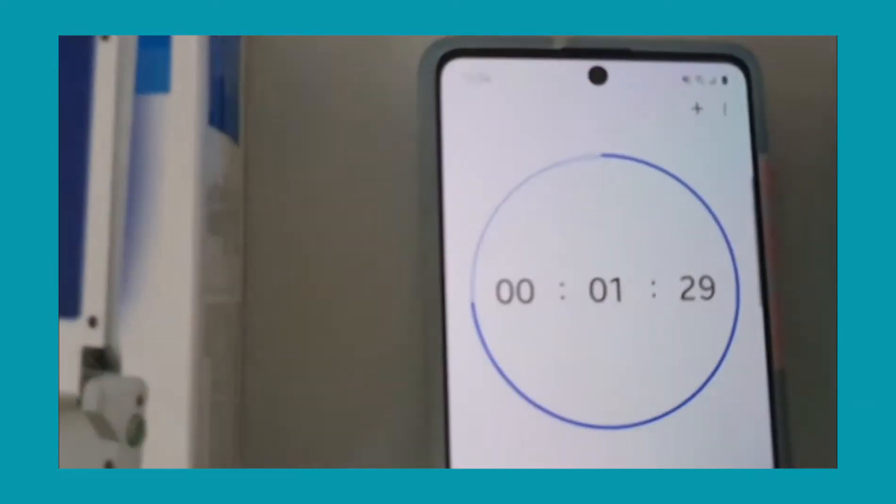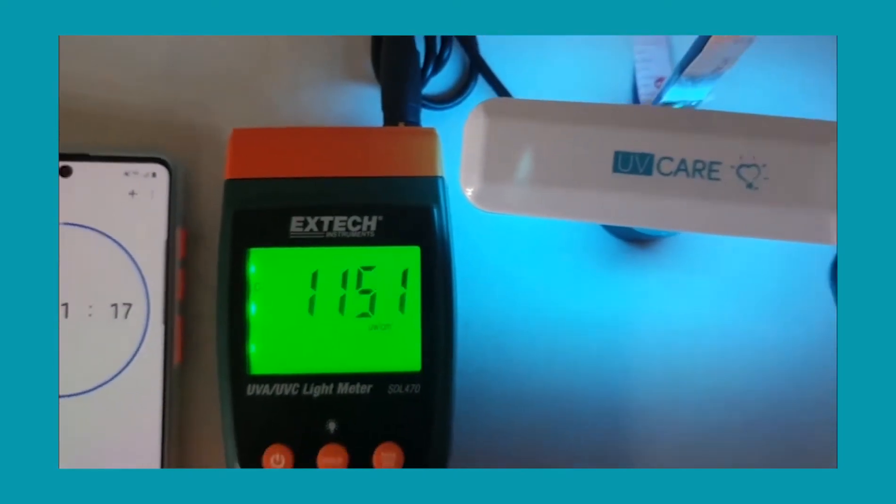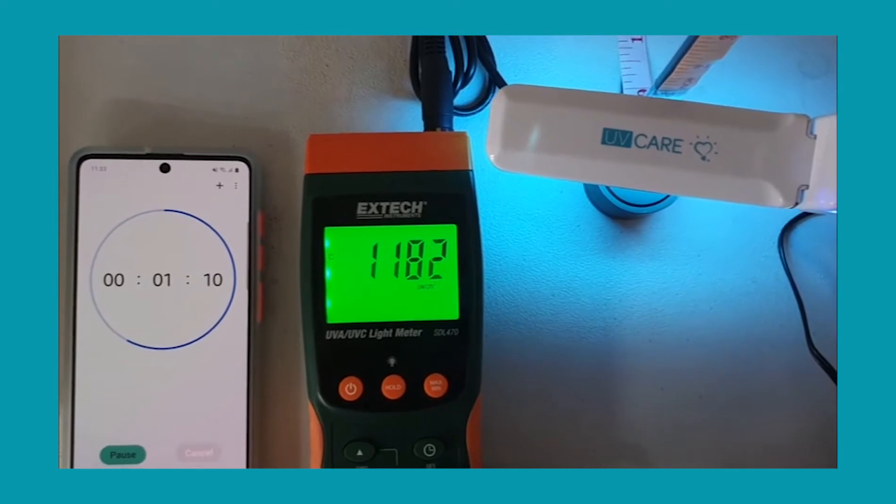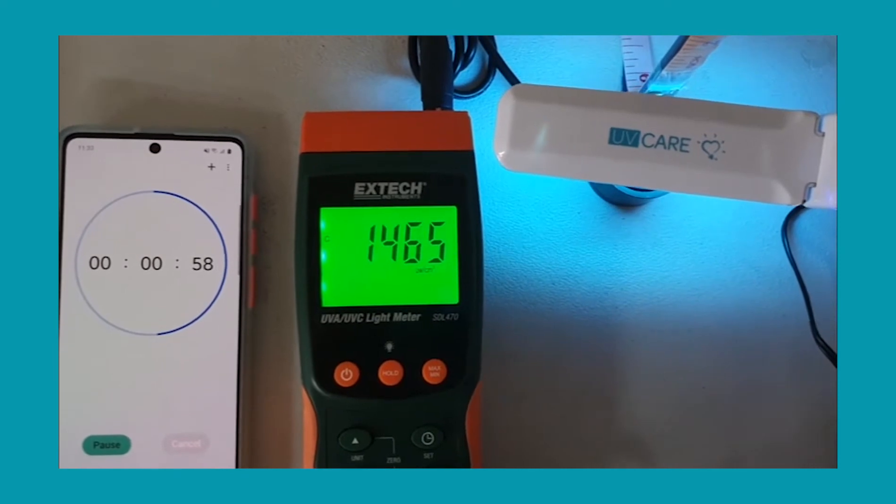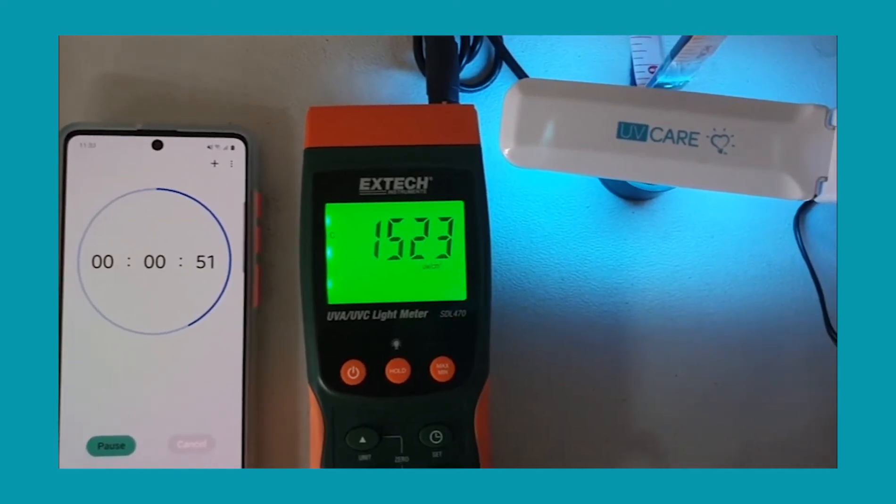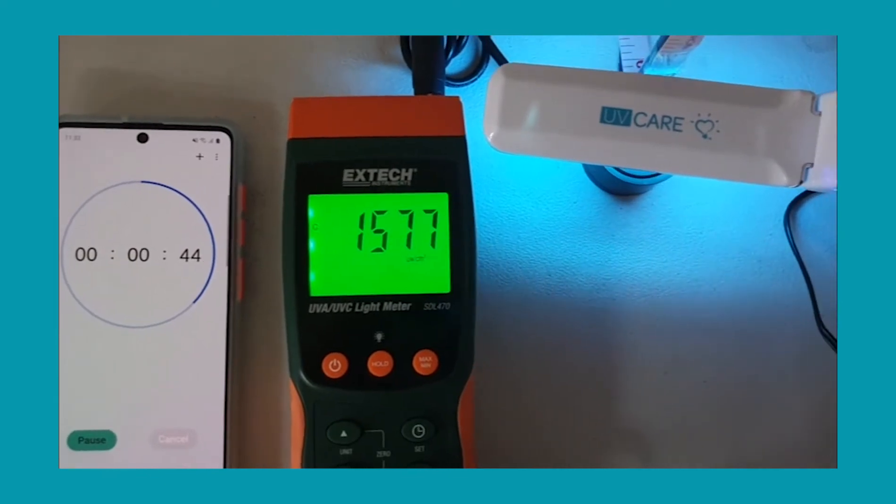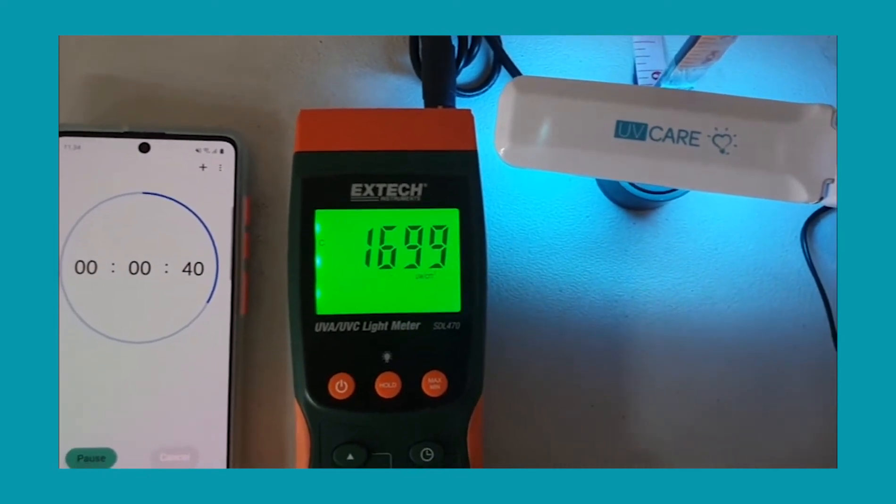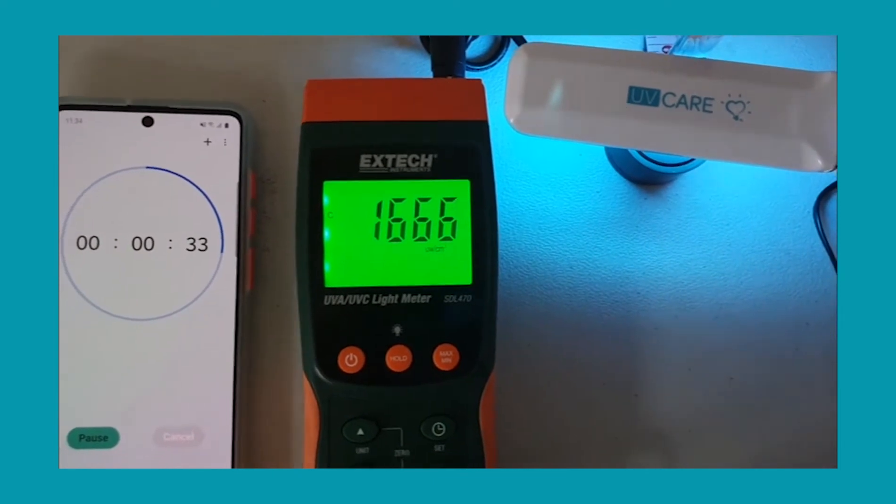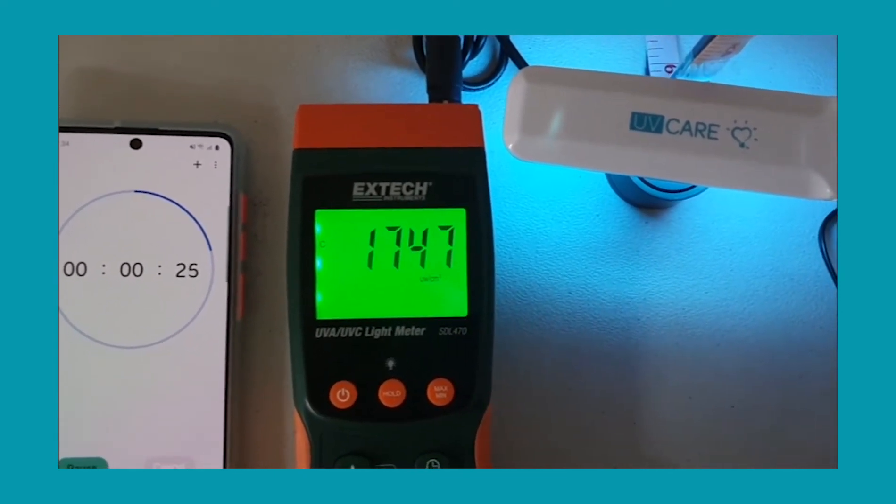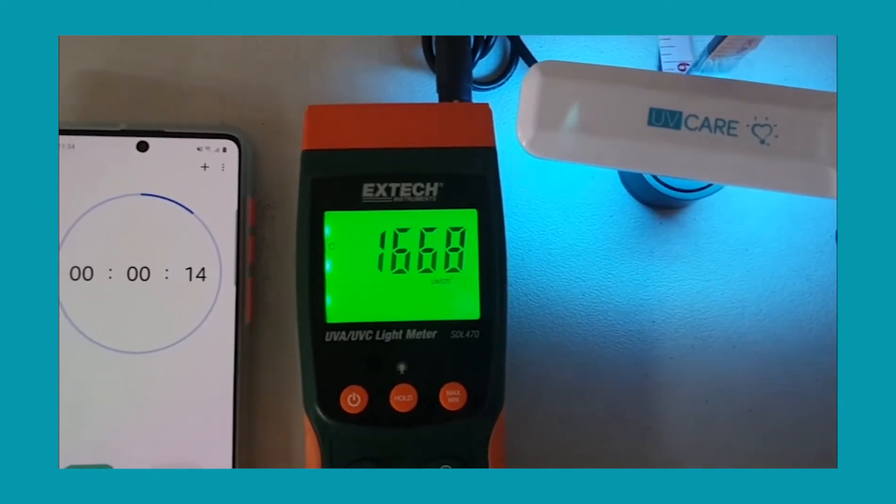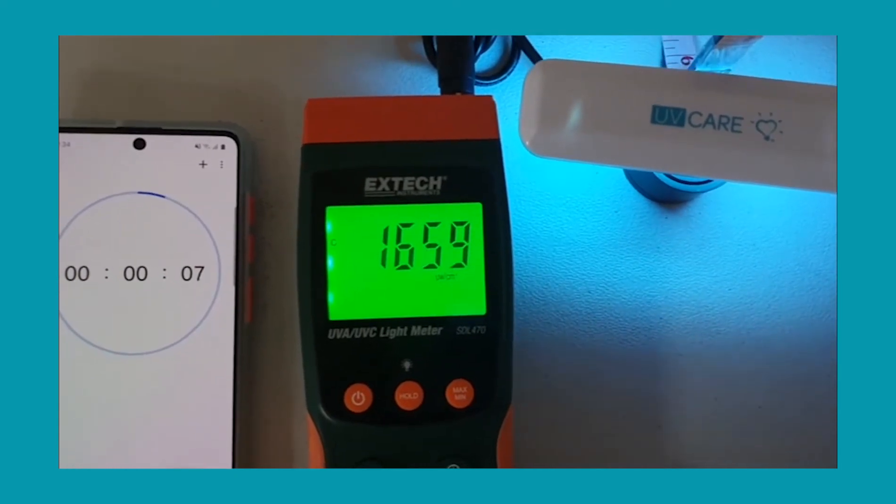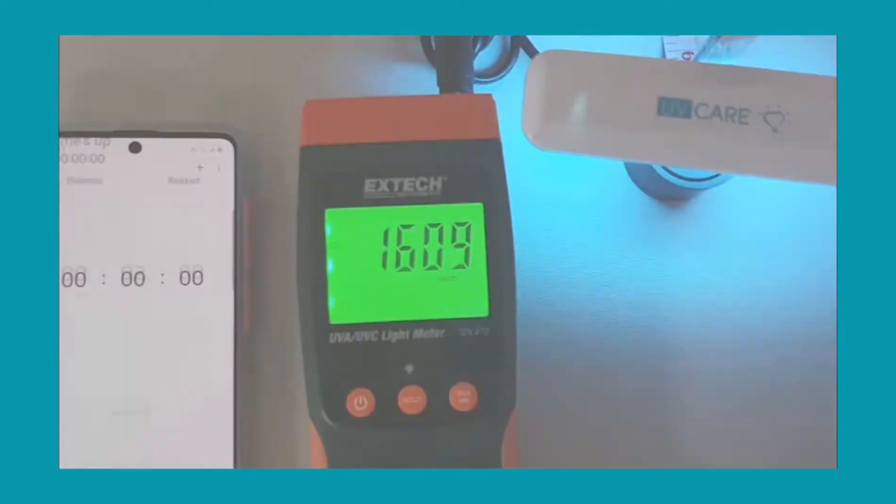We're going to measure it with a one-inch distance to determine the irradiance value from the light meter. In two minutes time, you can see UV Care is already over 1,600 microwatt. At one-inch distance, it has already emitted 1,600 microwatt.